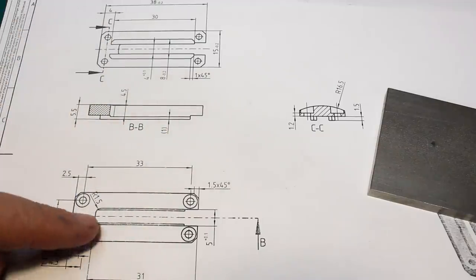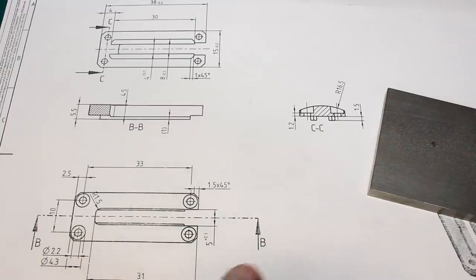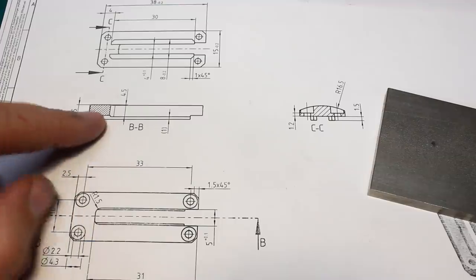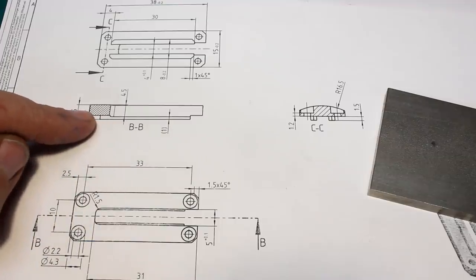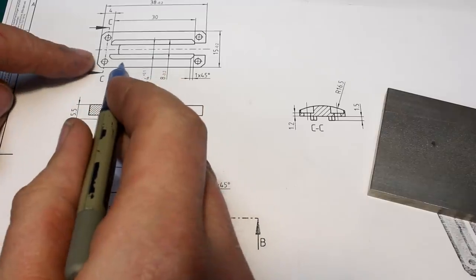You can see we have technical drawing - top view, side view in a section, section BB. That's through here, looking against this cut surface. Gives us this cross-hatched surface, which is this part here. And we have bottom view.